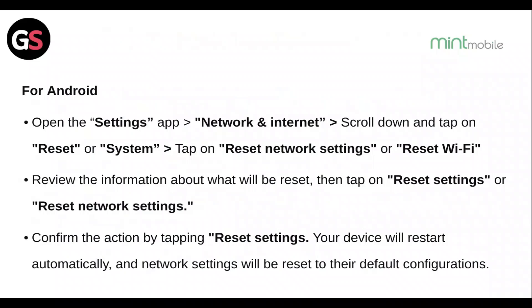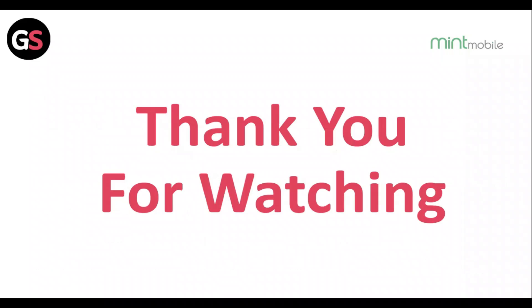For Android, open the Settings app, then go to Network and Internet, scroll down and tap Reset or System. Tap on Reset Network Settings or Reset Wi-Fi, review the information about what will be reset, then tap Reset Settings or Reset Network Settings. Confirm the action by tapping Reset Settings. Your device will restart automatically and network settings will be reset to their default configurations.